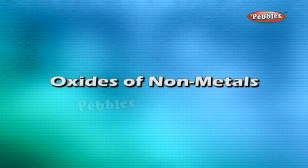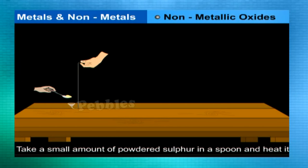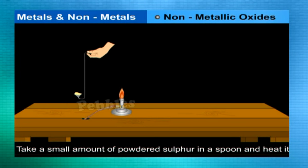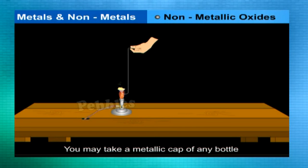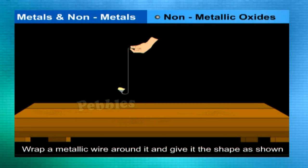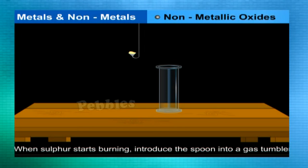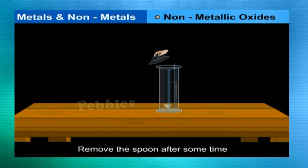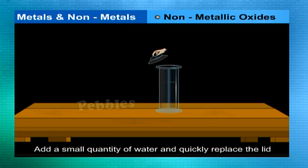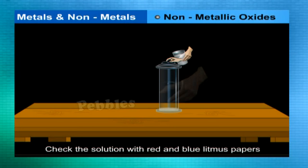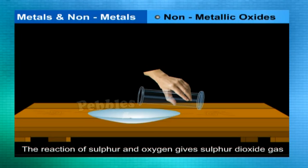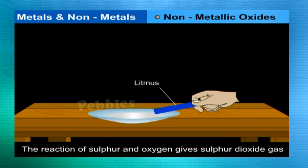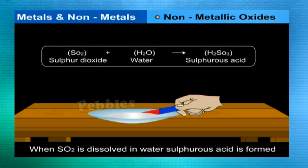Oxides of non-metals: Take a small amount of powdered sulphur in a deflagrating spoon and heat it. If a deflagrating spoon is not available, use a metallic bottle cap wrapped with metallic wire shaped as shown in the figure. As soon as sulphur starts burning, introduce the spoon into a gas jar or glass tumbler. Cover the tumbler with a lid to ensure the gas produced does not escape. Remove the spoon after some time and add a small quantity of water, then quickly replace the lid and shake well. The product formed is sulphur dioxide gas. When sulphur dioxide is dissolved in water, sulphurous acid is formed.